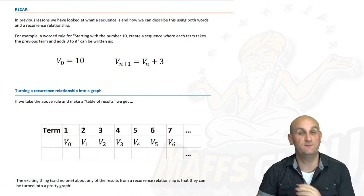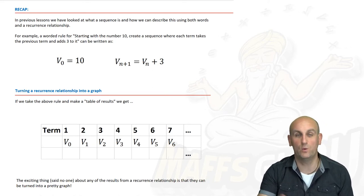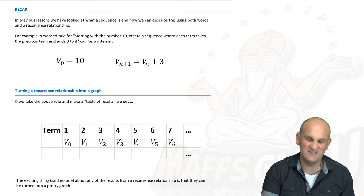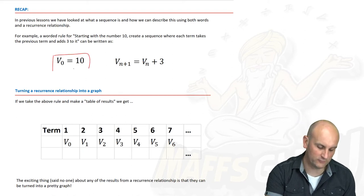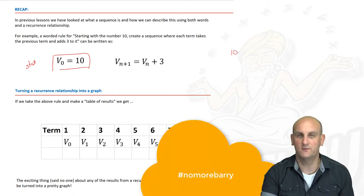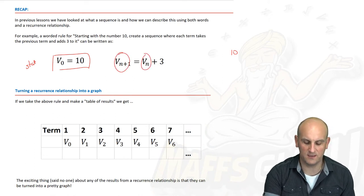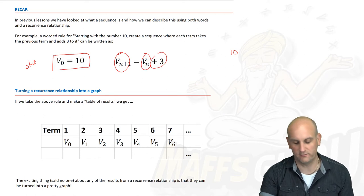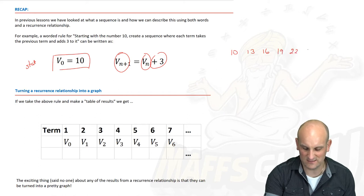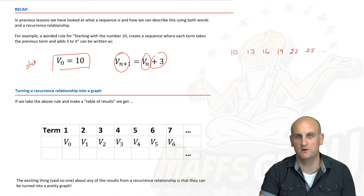So in a previous video, if you haven't already watched it, please do. They're short and awesome. We looked at the idea of what a recurrence relationship was. It was a way of describing how to go from term to term to term in a sequence. And this was one example. V0 equals 10. Now, because Barry tried to trick us but didn't, we knew that this was effectively our start number. So if I had a sequence, I was going to start with 10. It says to get to my next term, I'm going to take my previous term or my current term and I'm going to add 3. So taking this, adding 3 gives me 13. Add 3 gives me 16. And then 19, then 22 and 25. And so it goes on.